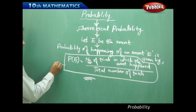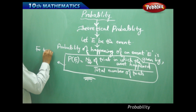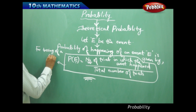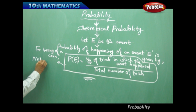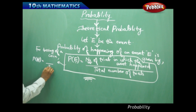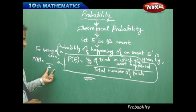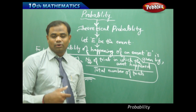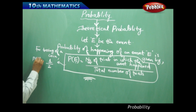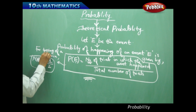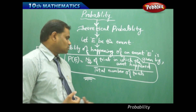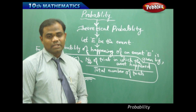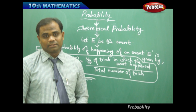For the tossing of a coin, the total number of possible outcomes is two — either a head or a tail. The number of trials in which the event of getting a head happens is one. Therefore, using the formula, probability of getting a head is 1/2. Let's see more examples to understand this formula better.